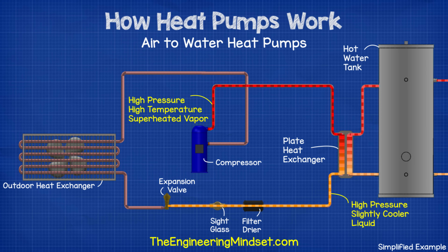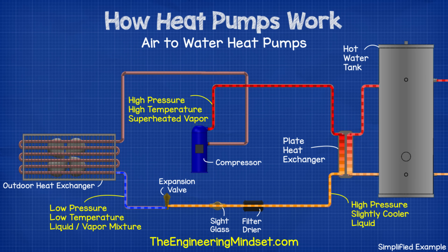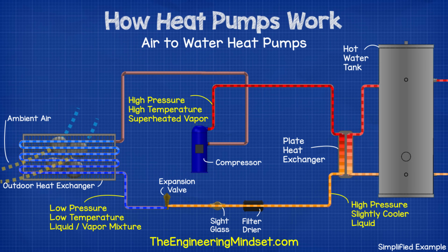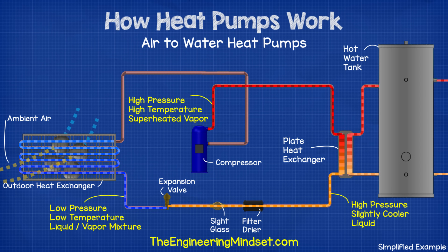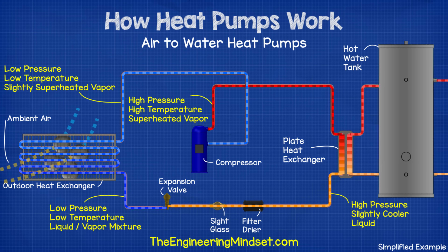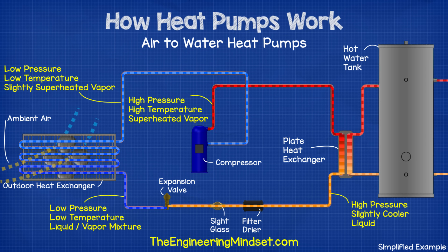The refrigerant then passes through the filter dryer and the sight glass, and then into the expansion valve. The expansion valve causes the refrigerant to become a part liquid, part vapor state at a low temperature and pressure. It then passes through the outdoor heat exchanger, where the outdoor ambient air causes the refrigerant to boil. The refrigerant then leaves at a low pressure, low temperature, slightly superheated vapor, and is then sucked back into the compressor to repeat the entire cycle. The hot water tank then provides hot water to the radiators, sinks, and showers within the building.